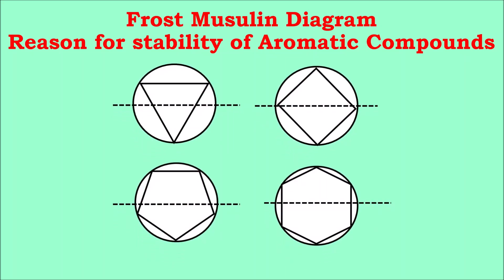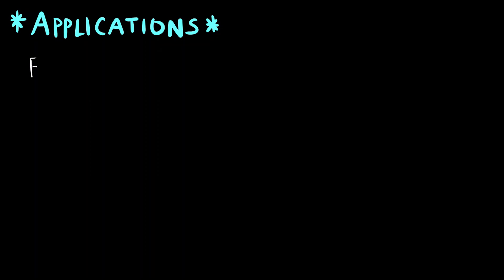So how does a Frost Circle diagram look like? It looks like this. This is mostly for cyclic compounds having different numbers of carbons. It can be a three-membered ring, four-membered ring, five, six, seven, or eight-membered ring. Let us first understand what a Frost Circle diagram is, and then we will see its application.